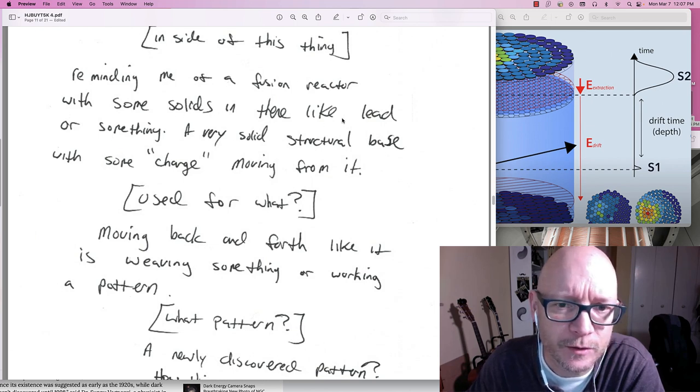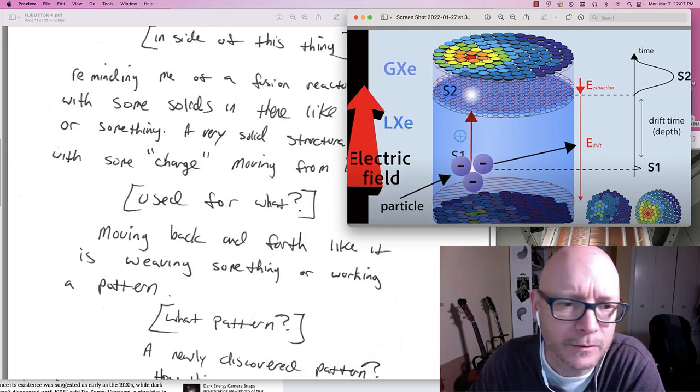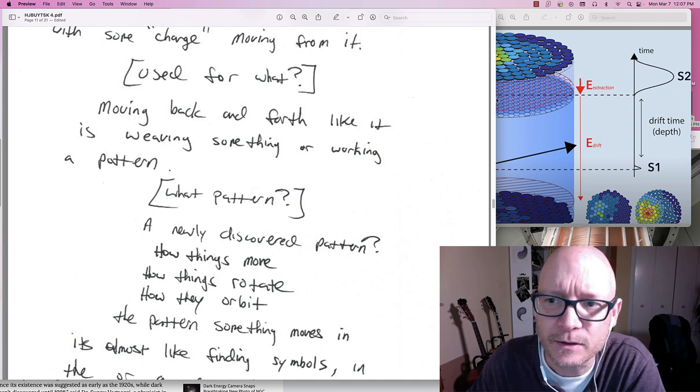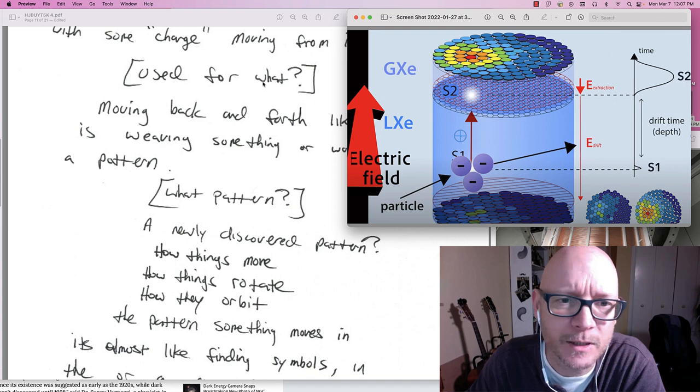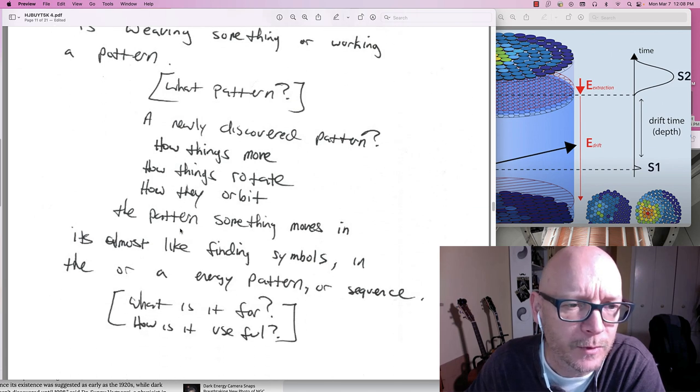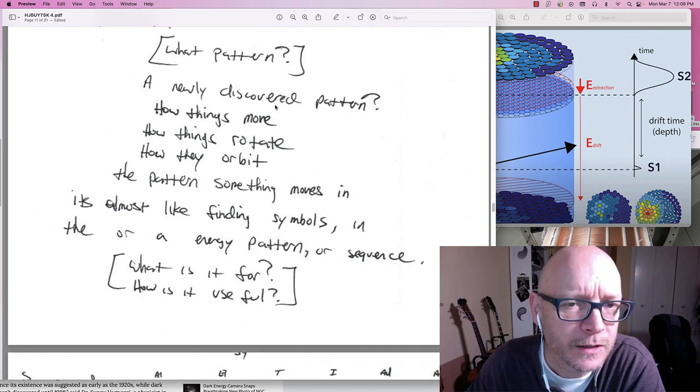Reminds me of a fusion reactor. With some solids in there. Like lead or something. A very solid structural base. With some charge. Moving from it. But use for what though I wonder. Moving back and forth. Like it is weaving something. Or working a pattern. That's interesting. It is working a pattern. As it is being detected. In its X and Y here. But what pattern though I wonder.